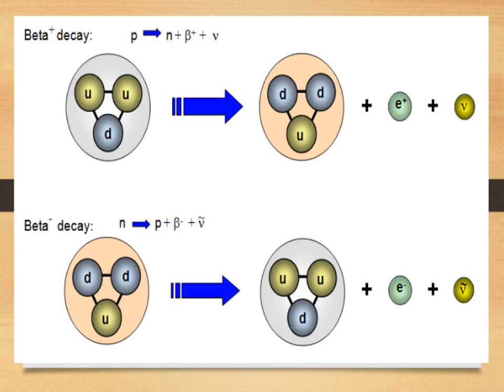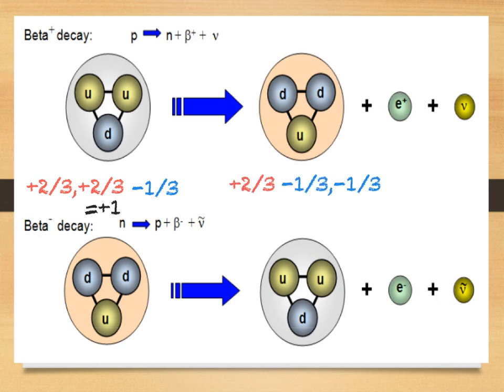We will now look at the charges of the quarks in a little more detail. An up quark has a charge of plus two-thirds and a down quark has a charge of minus one-third. In our proton we have two up quarks, giving two charges of plus two-thirds, and also one minus one-third charge from our down quark. This gives us an overall charge of plus one — the charge of a proton. When one of these up quarks turns into a down quark we now have one plus two-thirds charge and two minus one-third charges, giving an overall charge of zero — the charge of the neutron.